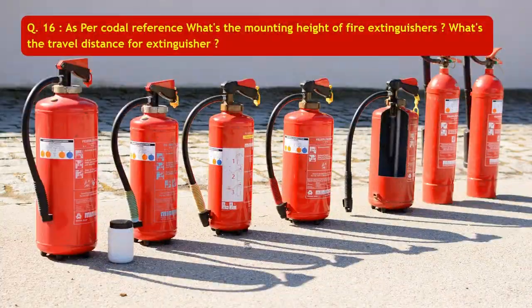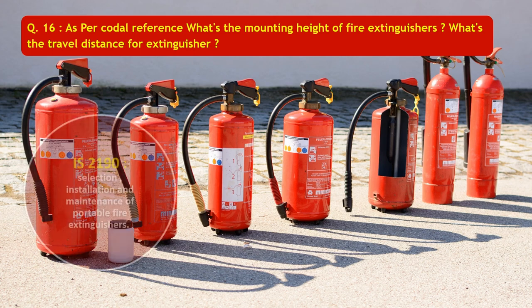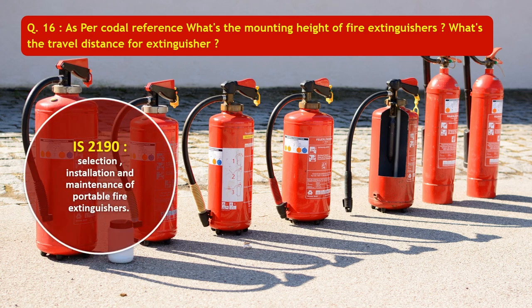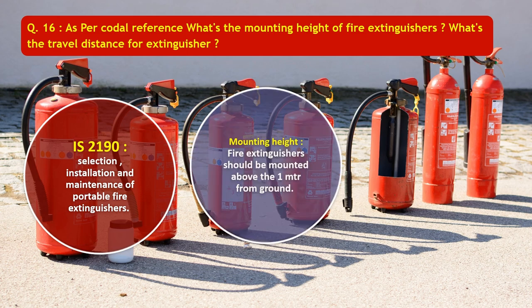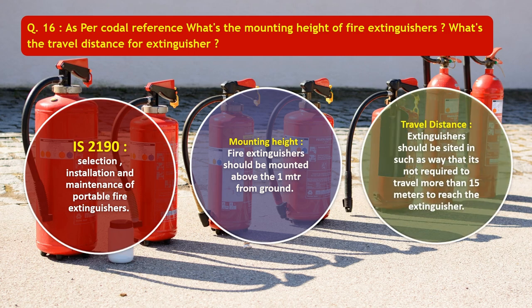Question number 16: As per codal reference, what is the mounting height of fire extinguishers? What is the travel distance for extinguishers? IS-2190 talks about selection, installation, and maintenance of portable fire extinguishers. As per IS-2190, mounting height for fire extinguishers should be above 1 meter from the ground. The travel distance as per IS-2190 is that extinguishers should be placed such that it is not required to travel more than 15 meters to reach the extinguisher.